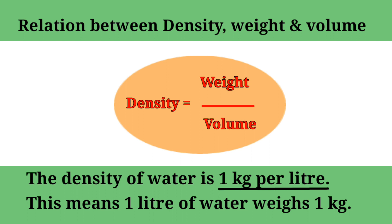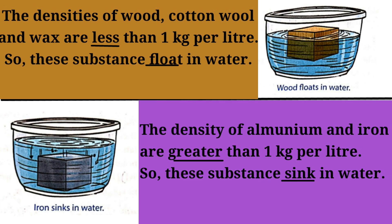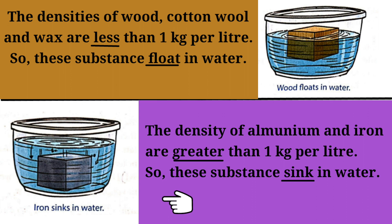The density of water is 1 kg per litre. This means 1 litre of water weighs 1 kg. The densities of wood, cotton wool and wax are less than 1 kg per litre, so these substances float in water. The density of aluminium and iron are greater than 1 kg per litre, so these substances sink in water.